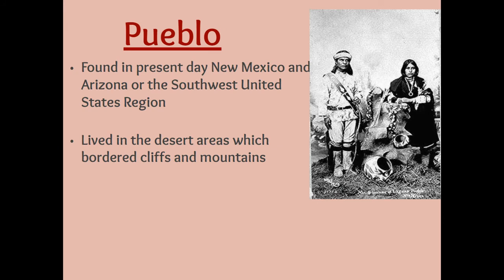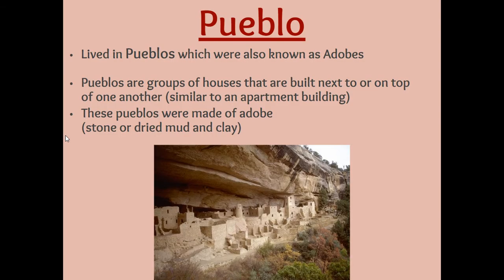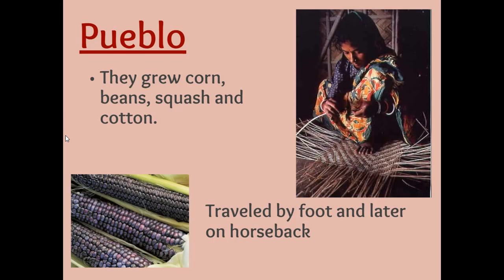Next up, we have the Pueblo tribe. The Pueblo tribe lives in present-day New Mexico and Arizona in the southwest United States. It's very hot and dry in that area, so they're going to have lots of desert areas. They live in what's called Pueblos — the Pueblo shelter is called Pueblo. It can also be known as adobe because they're using adobe clay. They grow corn, squash, and cotton.